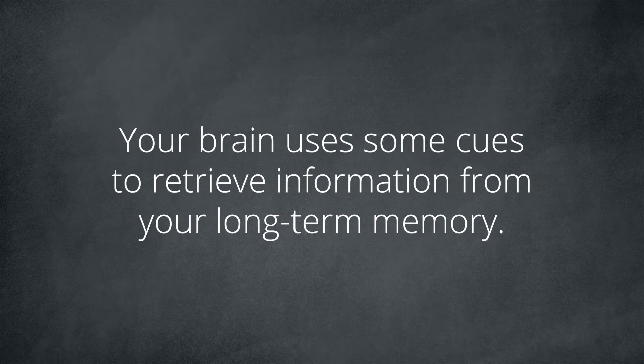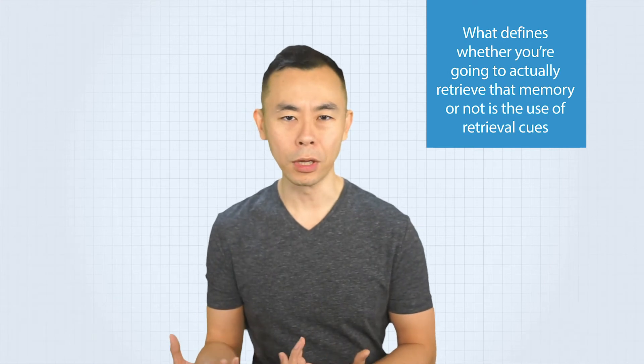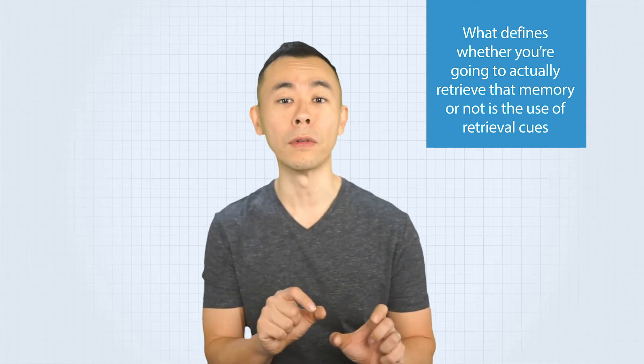Your brain uses some cues to retrieve information from your long-term memory. Whenever you try to remember something that is in your memory, you're activating the retrieval process. What defines whether you're going to retrieve that memory or not is the use of retrieval cues. Mainly, the cues you left during encoding.